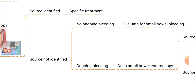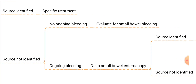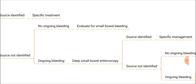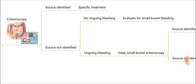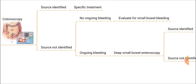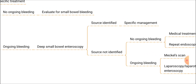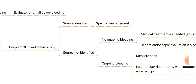If the source is not identified in the colonoscopy either, we see whether the patient has ongoing bleeding. If there is no ongoing bleeding after upper GI endoscopy, angiography, and colonoscopy, the pathology may be in the small bowel, so we can evaluate for small bowel bleeding. If ongoing bleeding is still present after all three investigations, the next investigation of choice is deep small bowel enteroscopy.